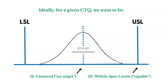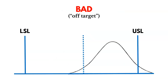Now let's talk about capability goals. Ideally, for a given CTQ, we want to be centered on target and within customer specification limits — meaning capable. We want to be on target and capable. If we're off target, that's a bad scenario: we are outside of specification limits, but the good news is there's not a lot of variation.